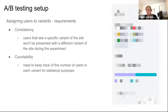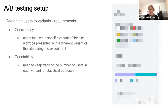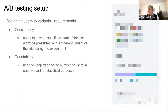There are some requirements on assigning users to variants. The most important is consistency — users who see a specific variant of the platform should not be presented with a different variant during the experiment. There is also accountability, where you need to keep track of the number of users in each variant for statistical purposes. An example shows a 50-50 division between control and treatment group.